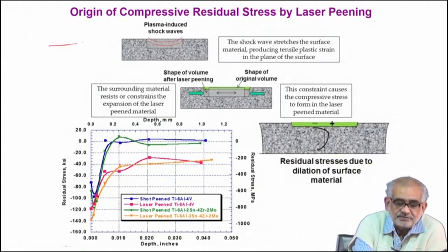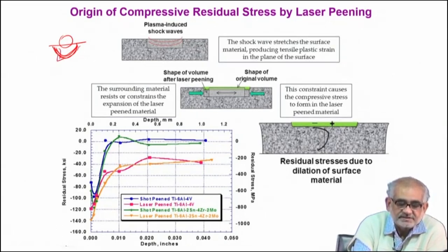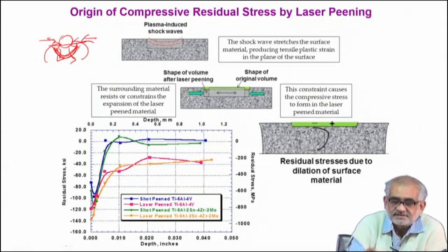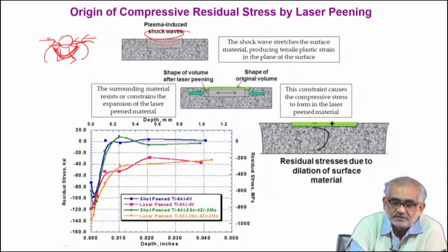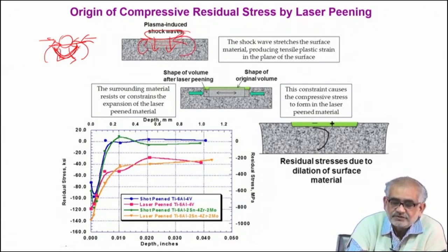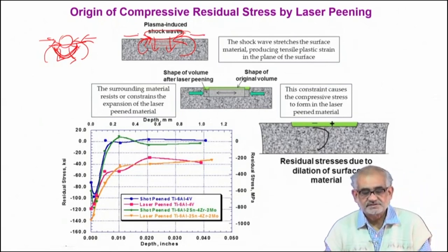Just like in shot peening or shock pinning — where the striker hits the surface — the deformation zone is created below the incident object or projectile. Initially the material deforms, but then wants to spring back, and that is how we create a state of compressive stress on the surface. The same thing happens in the case of plasma-induced shock waves: instead of a physical object hitting the surface, it is the shock wave created through the plasma that tends to deform the surface. Because of the reaction to that tendency of deformation, you create a state of stress which is compressive in nature.